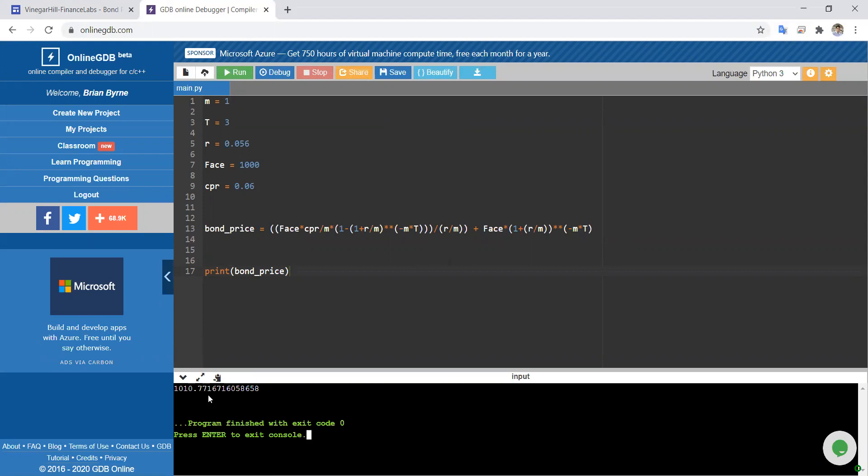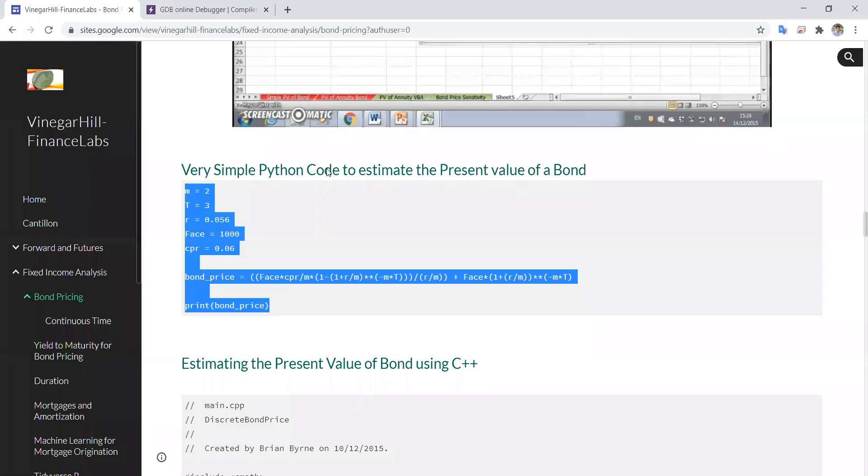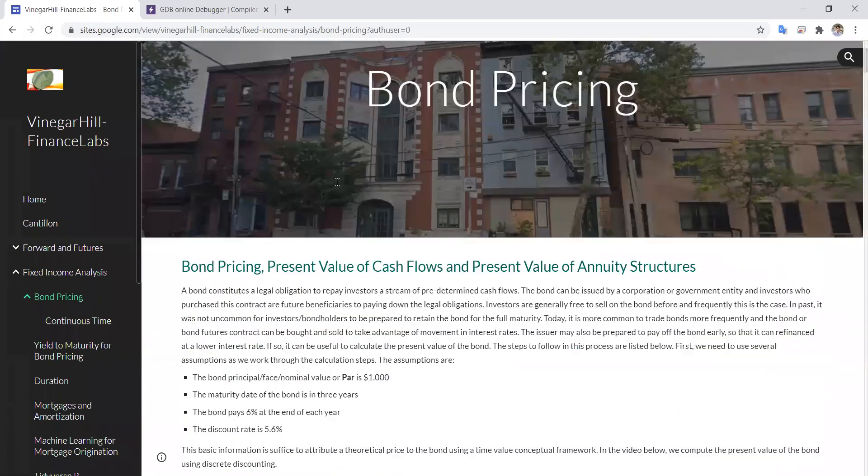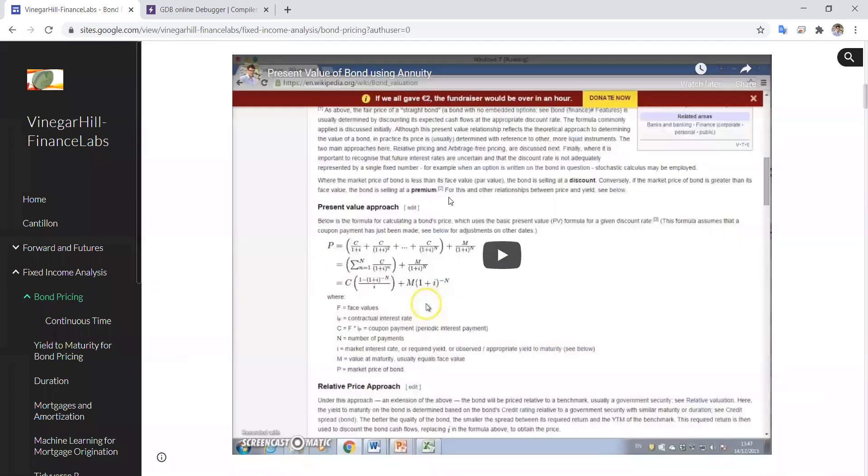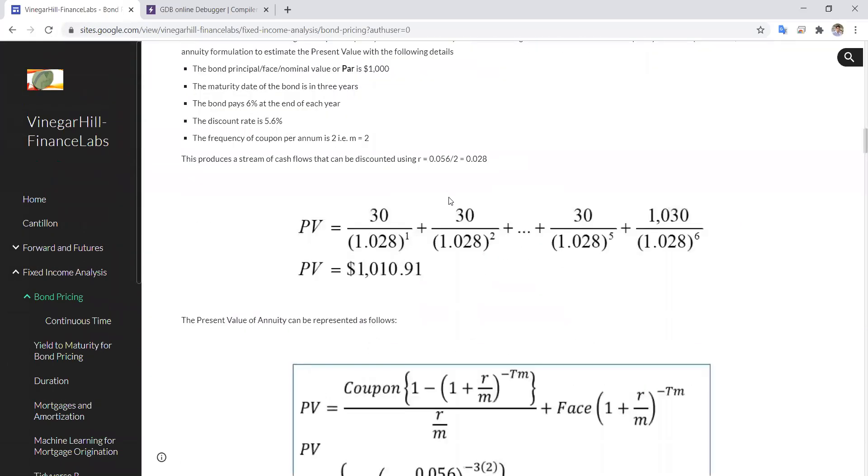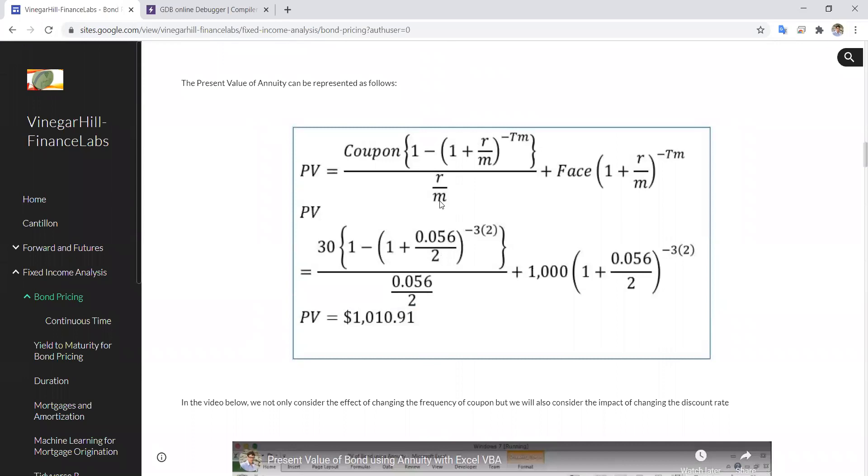What if we change this to 1? We should get $1,010.77. So let's run that - $1,010.77. That would be consistent with the first estimation we ran, which was $1,010.77 as a present value annuity.